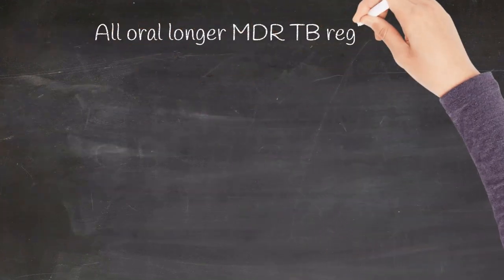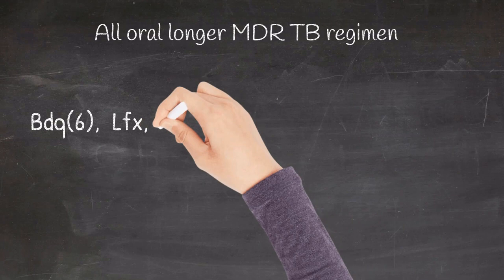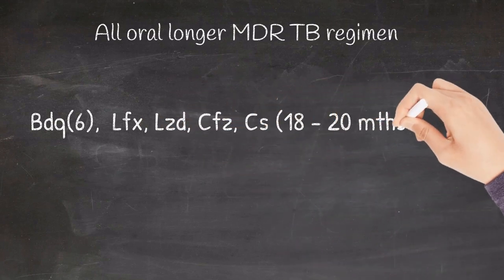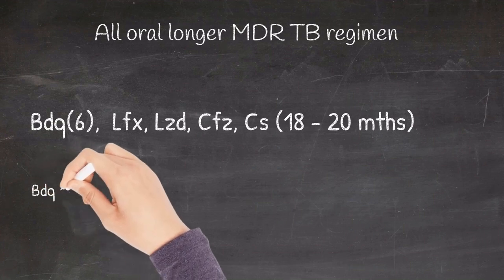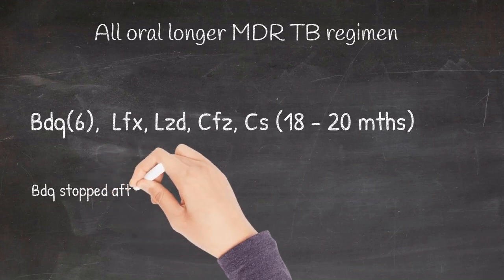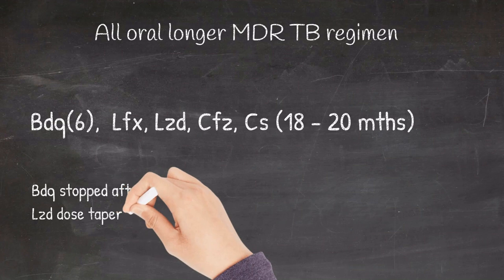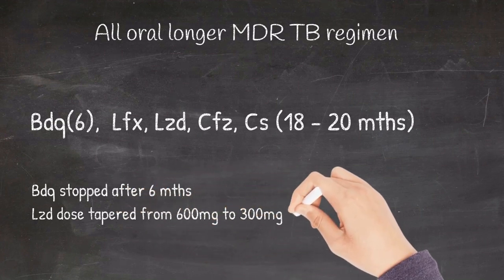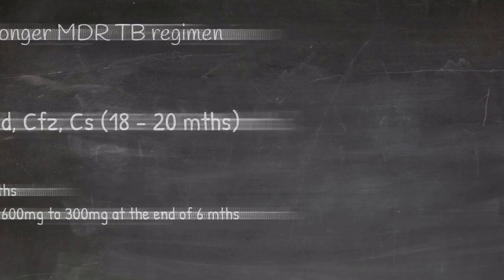The drugs in the regimen includes bedaquiline, levofloxacin, linezolid, clofazimine, and cycloserine which is continued for 18 to 20 months. Here also there is no intensive and continuation phase. Bedaquiline is stopped after six months. The dose of linezolid is reduced from 600 mg to 300 mg at the end of six months due to the risk of hematological toxicity.